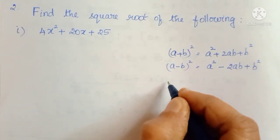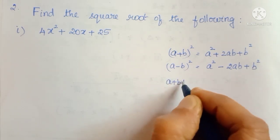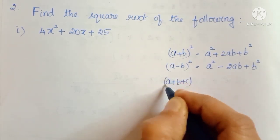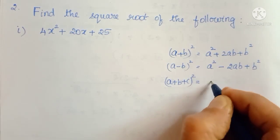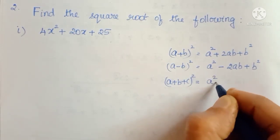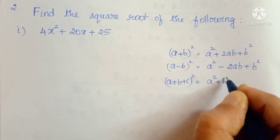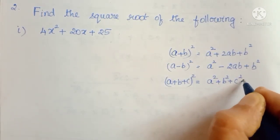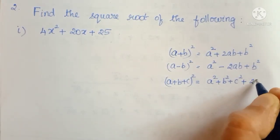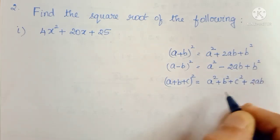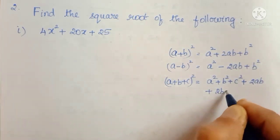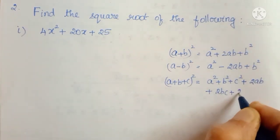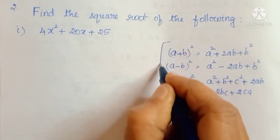Now the third formula is: a plus b plus c, the whole squared, that is equal to a squared plus b squared plus c squared plus 2ab plus 2bc plus 2ca.